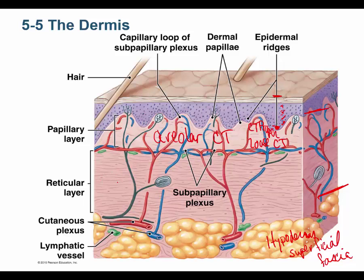The reticular layer is a confusingly named layer — it is NOT reticular connective tissue. It's actually dense irregular connective tissue, the same kind that makes up capsules of organs and is found in periosteum and perichondrium, as discussed in the tissue chapter. So those are the two layers of the dermis: papillary (areolar) and reticular (dense irregular connective tissue).